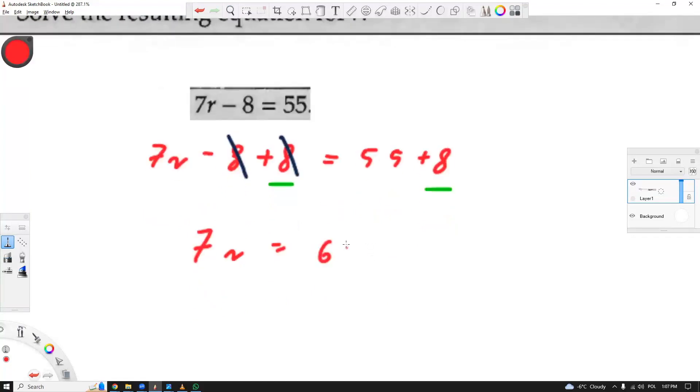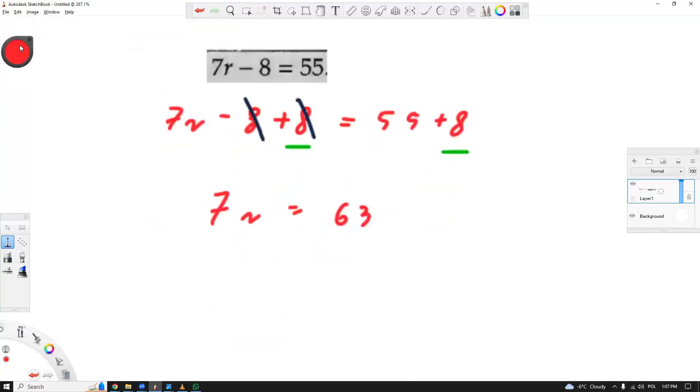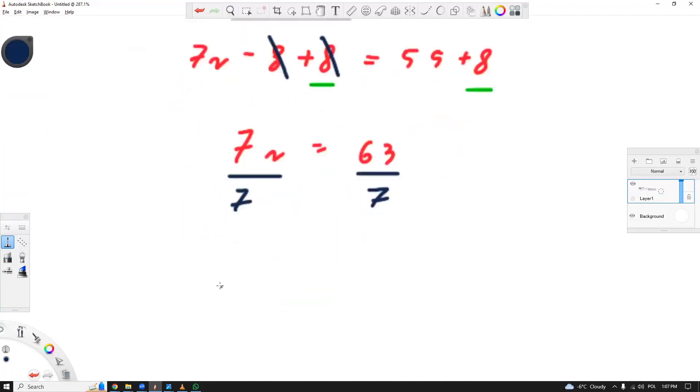Here, we're getting 63. So now, we want to get rid of the 7. To do that, I will divide both sides by 7. Here, I'm left with r, and here, I'm left with 9.